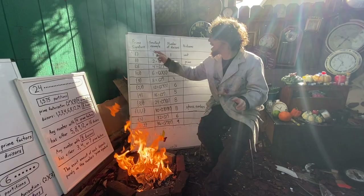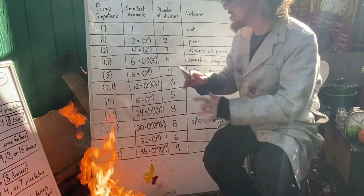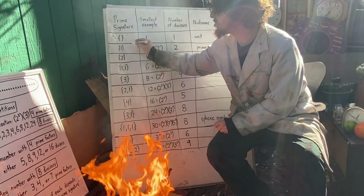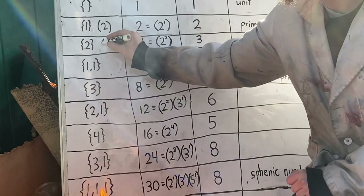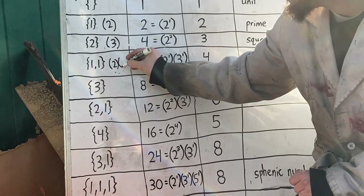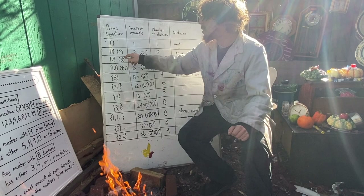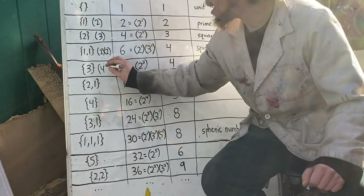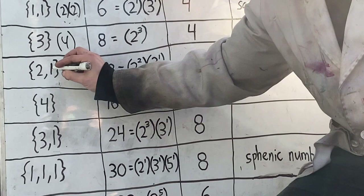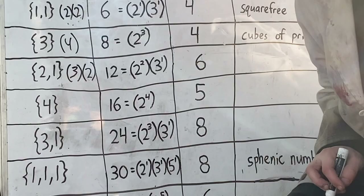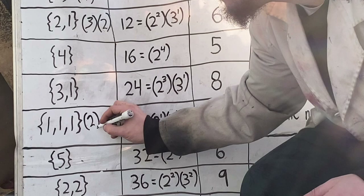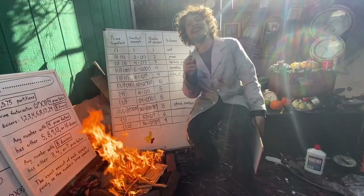You ready to see the magic formula for turning prime signatures into how many divisors that type of number must have? Here's all you have to do: take whatever numbers are inside the prime signature, add 1 to each one — so 1 turns to 2, 2 turns to 3, and 1 and 1 turn to 2 each — and multiply the list together. So for 1, 1: they become 2s, multiply them to get 4. For a single 2: add 1 to get 3. For 2, 1: 2 plus 1 is 3, 1 plus 1 is 2, multiply to get 6. For the sphenic numbers with 1, 1, 1: we get 2 times 2 times 2, which gives us 8.